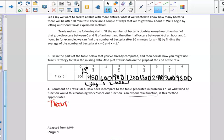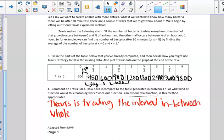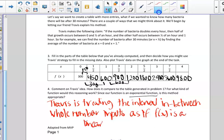So we'll just write that down. Travis is treating the interval in between whole number inputs as if f(x) is a linear function. And we know for certain that it's not a linear function because we are multiplying by a common ratio, not adding by a common difference.